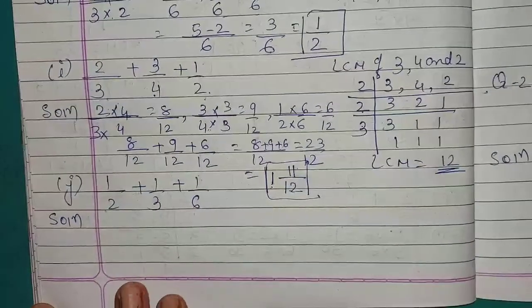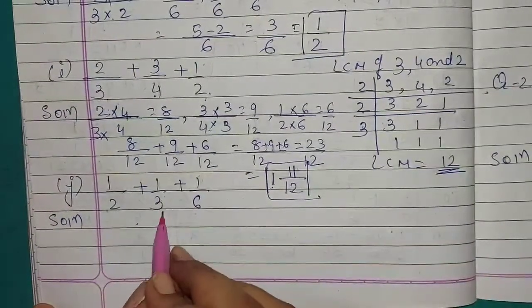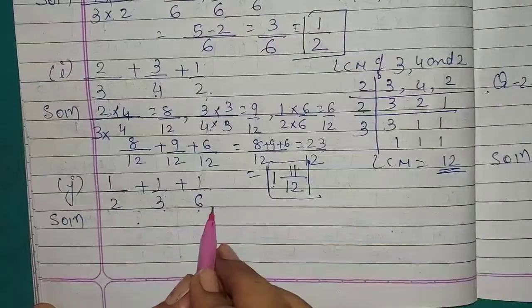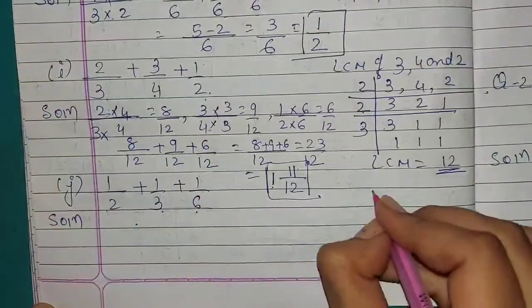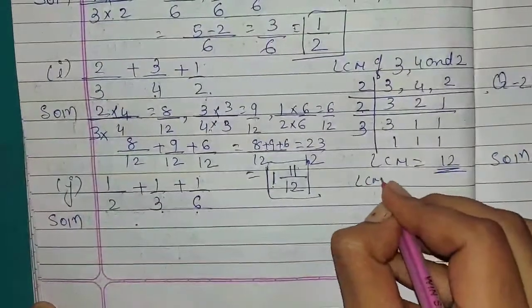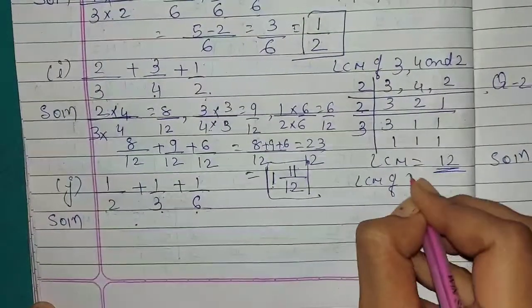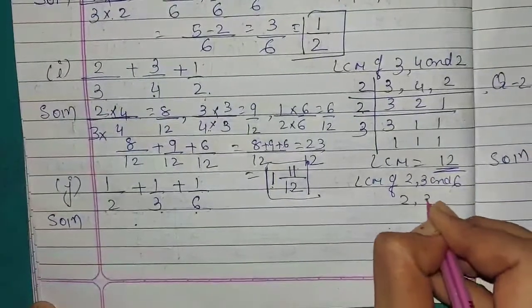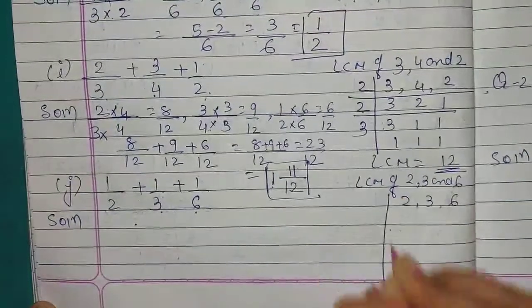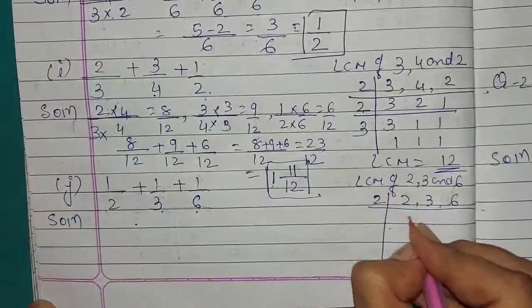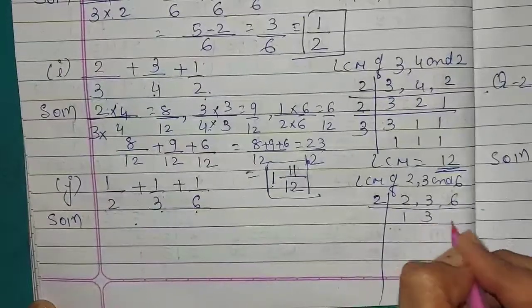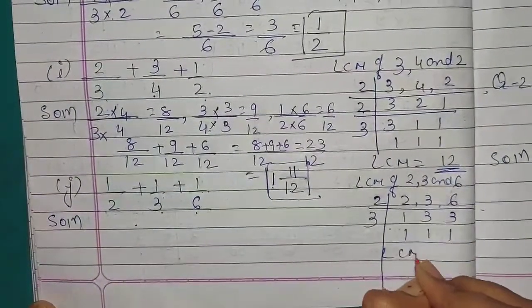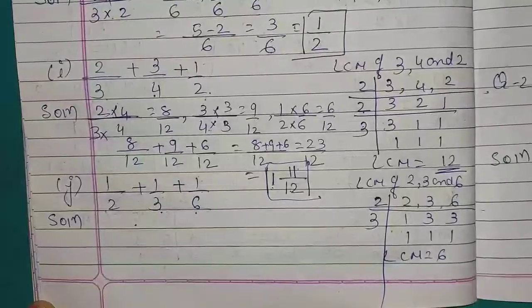Question J: 1 upon 2 plus 1 upon 3 plus 1 upon 6. We take LCM of 2, 3, and 6, which equals 6.